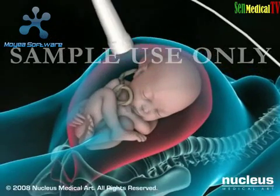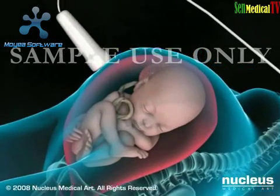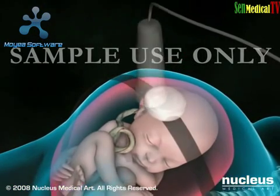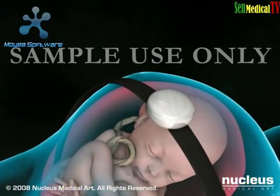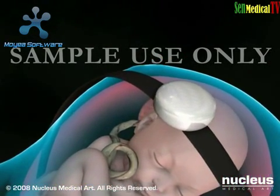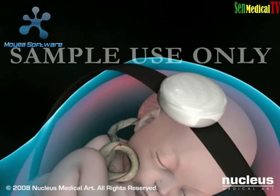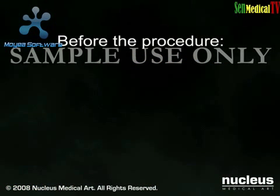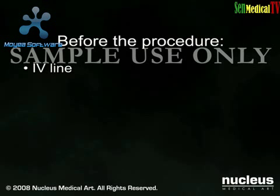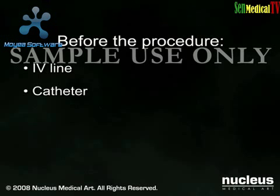Your doctor may use ultrasound testing and a fetal heart monitor to help decide whether your baby should be delivered by cesarean. When a cesarean section becomes necessary, you will be prepped for surgery. An intravenous line will be started and a catheter will be inserted into your bladder to drain urine.